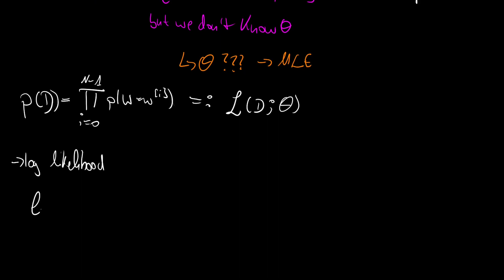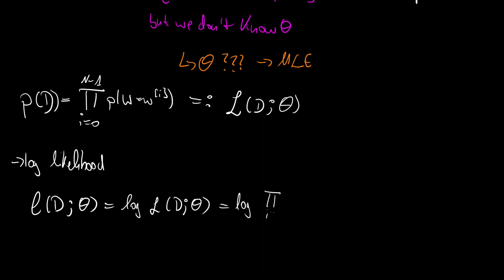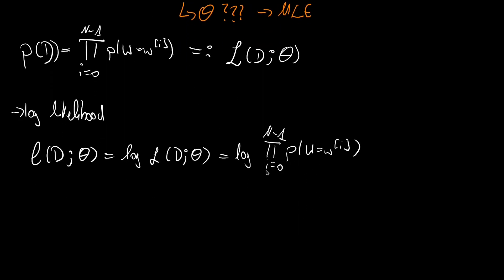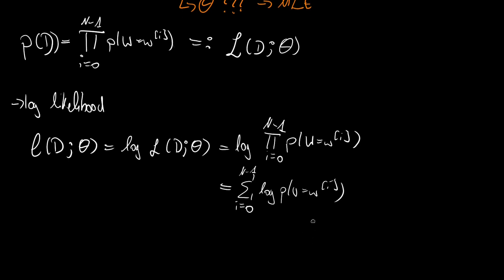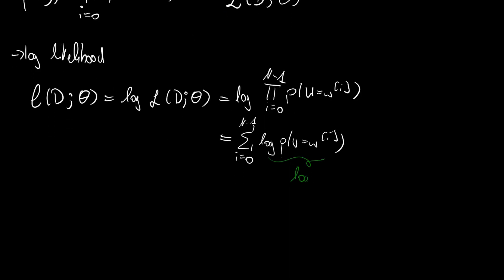The log likelihood is defined with a small l, based on the data set and also on theta. It is just the logarithm applied to our big L given theta. So what we have is the logarithm applied to the product from i equals zero to n minus one over p of w of our observation. And by the rules of the logarithm, the logarithm of a product turns into a sum of the logarithms. So this is equal to the sum from i equals zero to n minus one over the logarithm of our probability of the particular data point. This is also called the log probability.